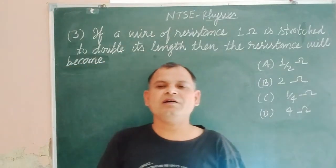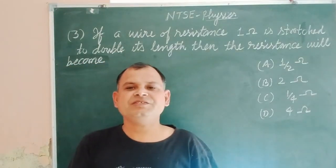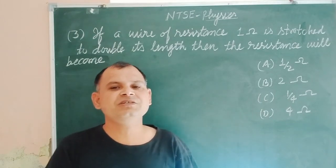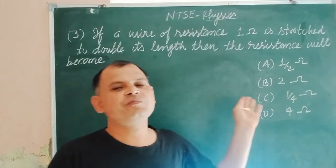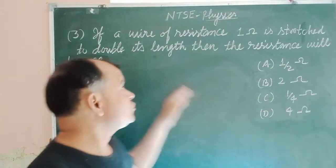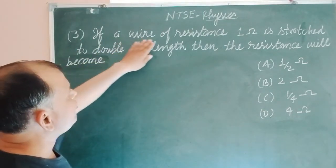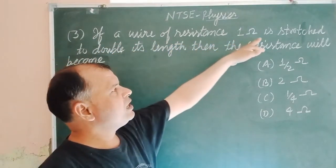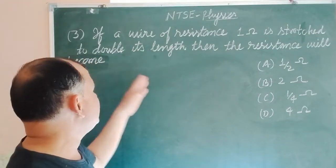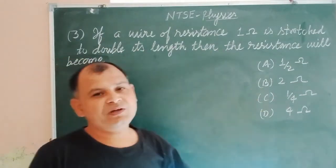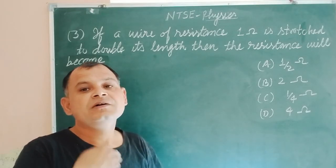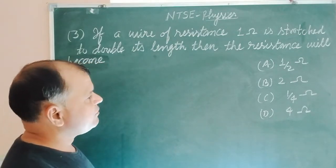Hello students, welcome to our anti-pacific solution series. We are solving problems related to electricity, and this is one of the most important problems asked many times in different examples. The problem is: if a wire of resistance 1 ohm is stressed to double its length, then what will the resistance become?